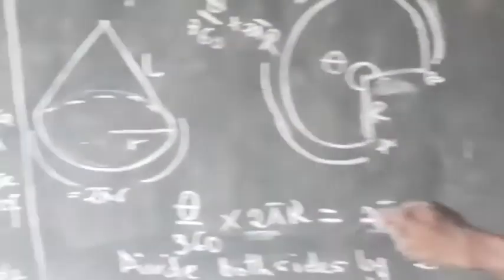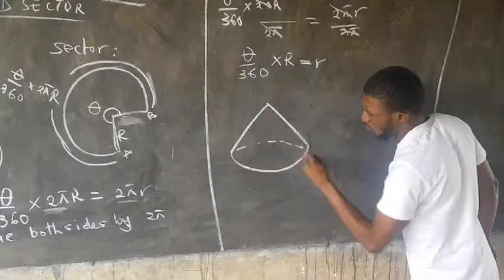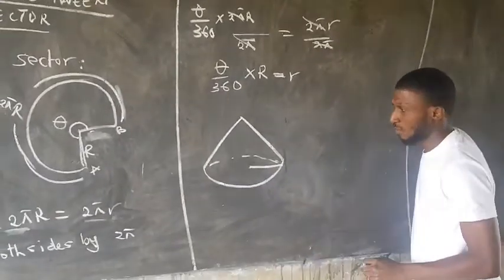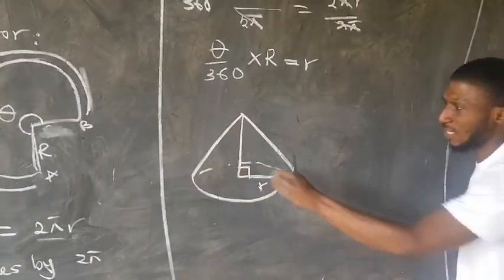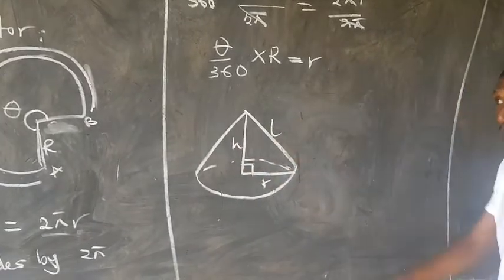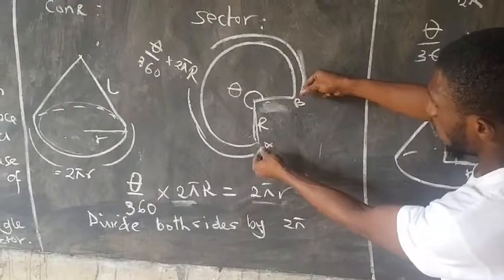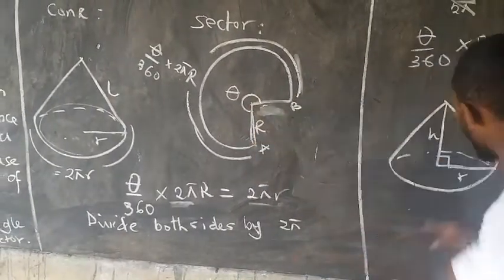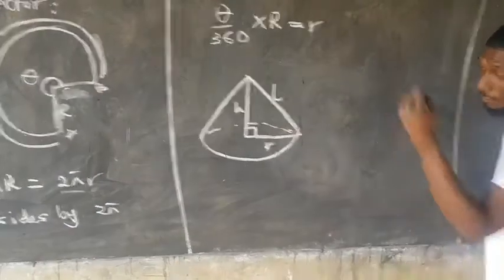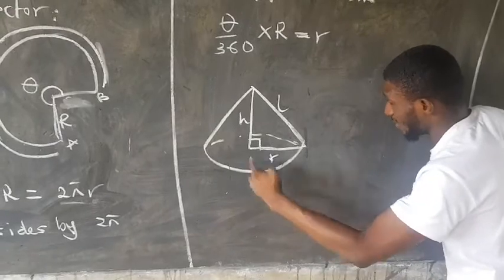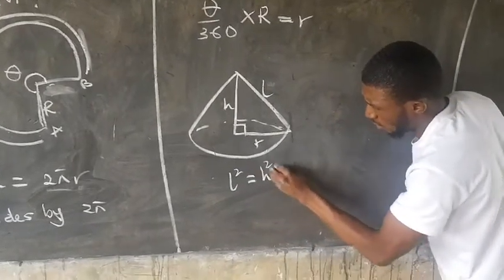Now, to find the perpendicular height of any cone, draw the cone with base radius r and perpendicular height h, and slant height l. Remember, the slant height l is the same thing as the radius of the sector. Using Pythagoras' theorem on the right-angle triangle formed, the square on the hypotenuse side equals the sum of squares on the other sides: l² = h² + r².